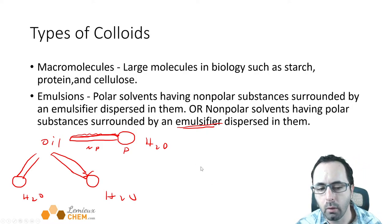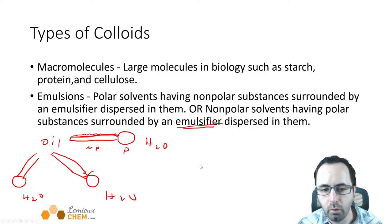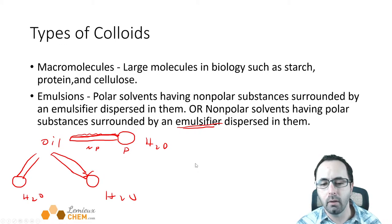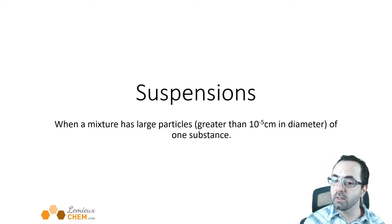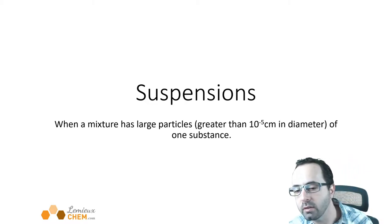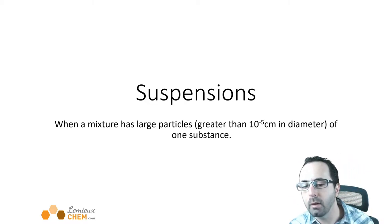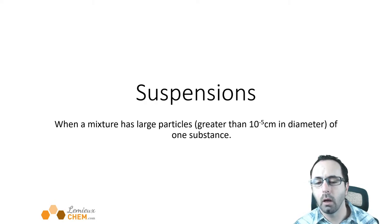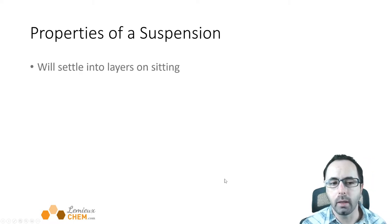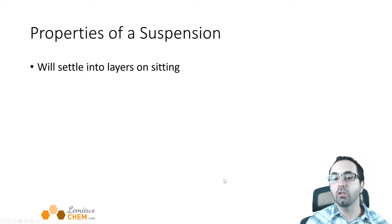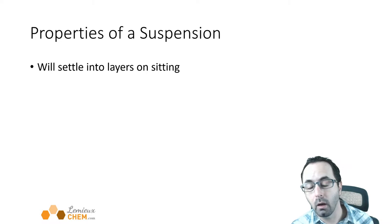Emulsions are colloids as well because these droplets are quite large — not large enough to settle out, but large enough to scatter light. Suspensions have larger particles in them than colloids do. Those particles are 10 to the minus 5 centimeters in diameter or larger. You'll differentiate a suspension from a colloid because the suspension will settle into layers if you let it sit.